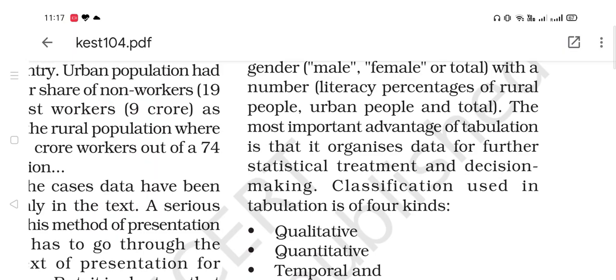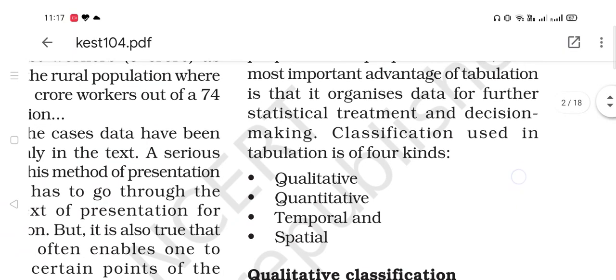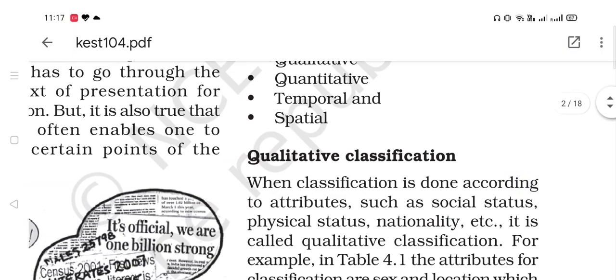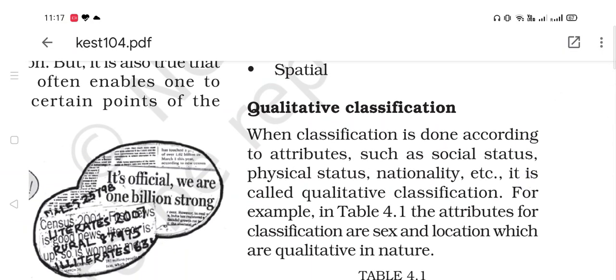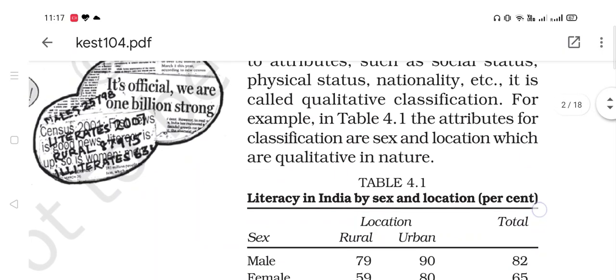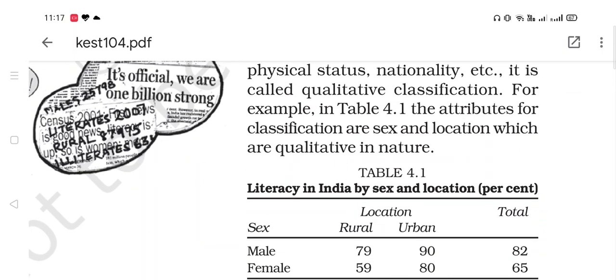The tabular presentation is divided into 4 types: Qualitative, Quantitative, Temporal, and Spatial. The first type is qualitative classification. When classification is done according to attributes such as social status, physical status, nationality, etc., it is called qualitative classification. In Table 4.1, the attributes for classification are sex and location, which are qualitative in nature.